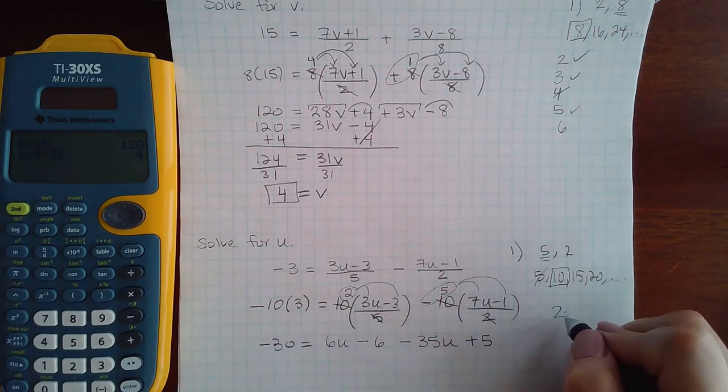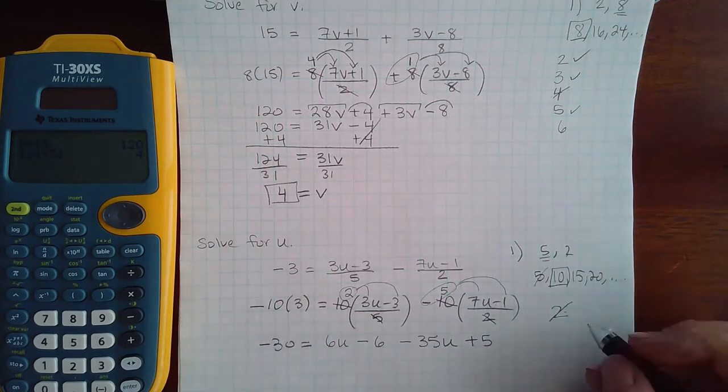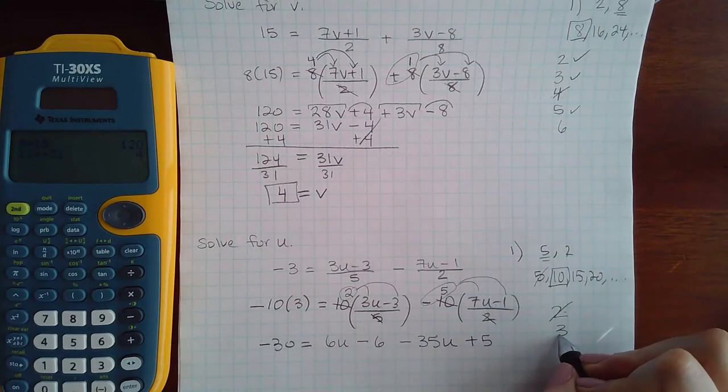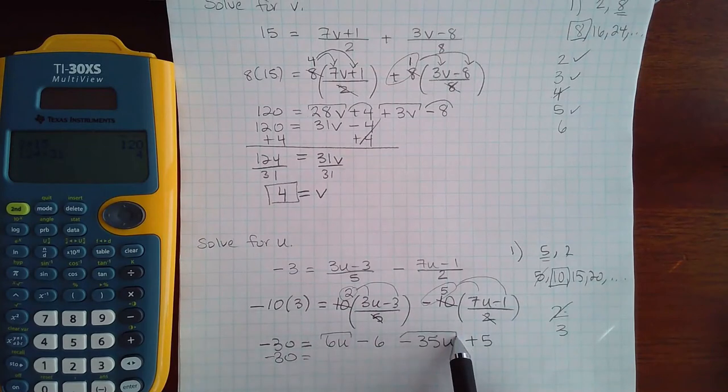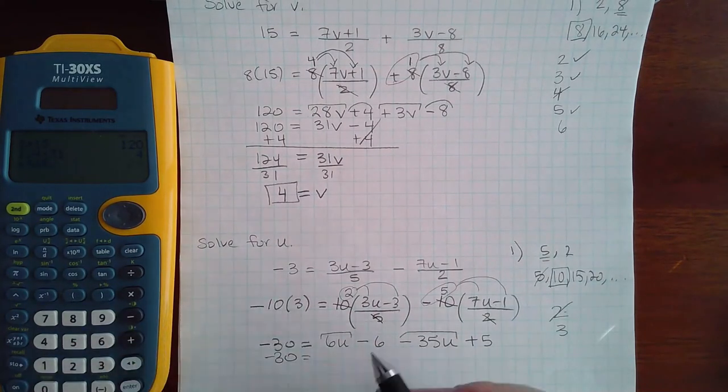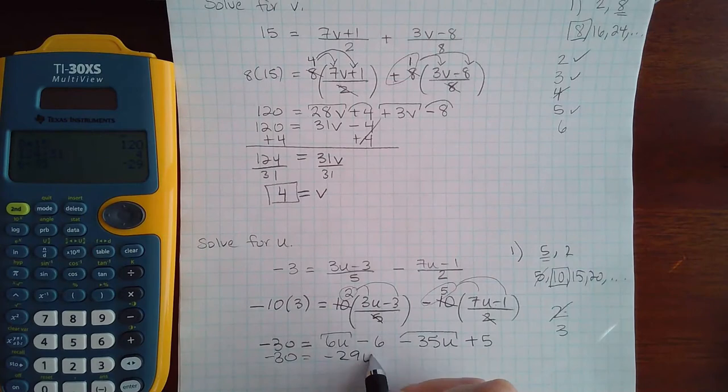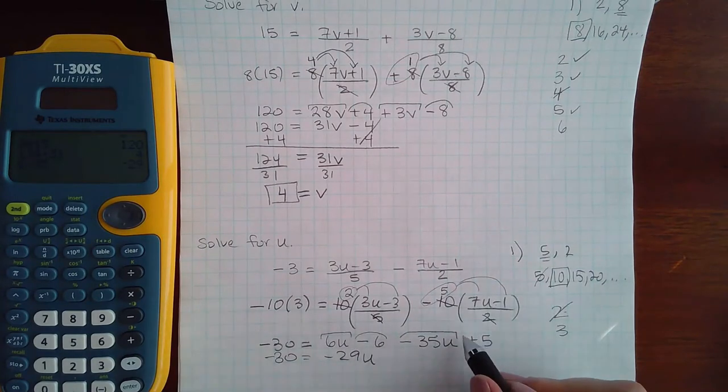So step 2 has already been done because I already got rid of all the parentheses. Step 3 is to combine my like terms. So I do have 6u minus 35u, which is negative 29u. And then I also have constants negative 6 plus 5, which is a negative 1.